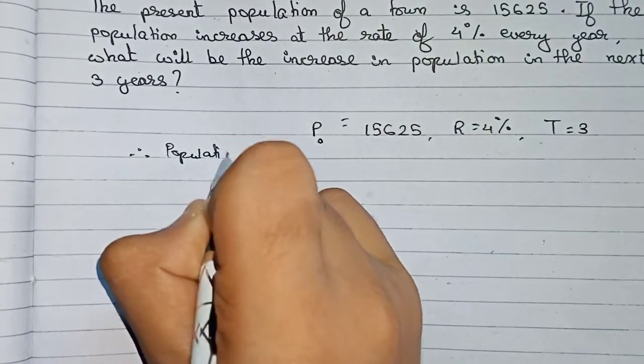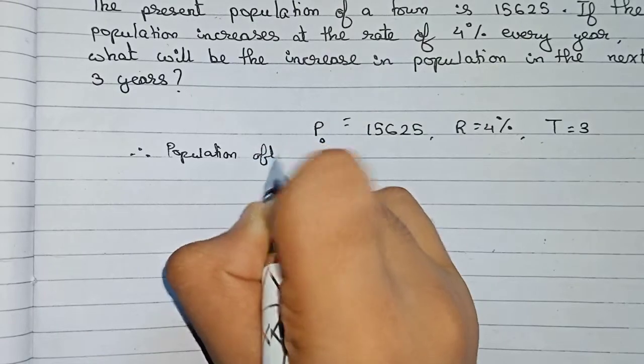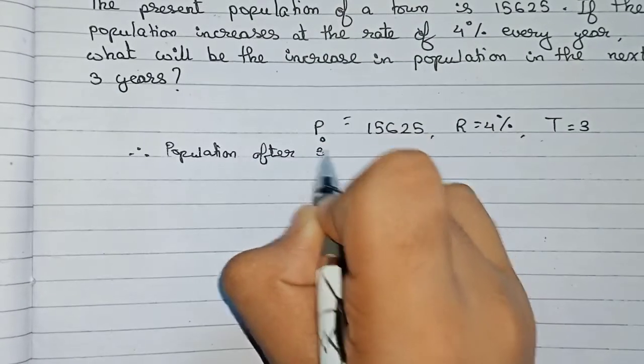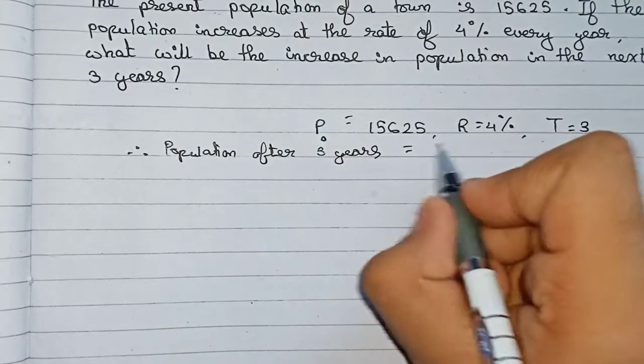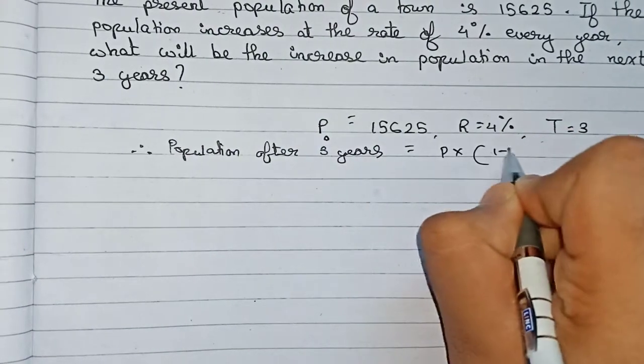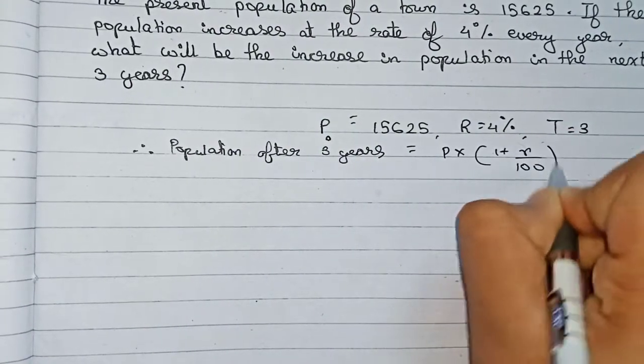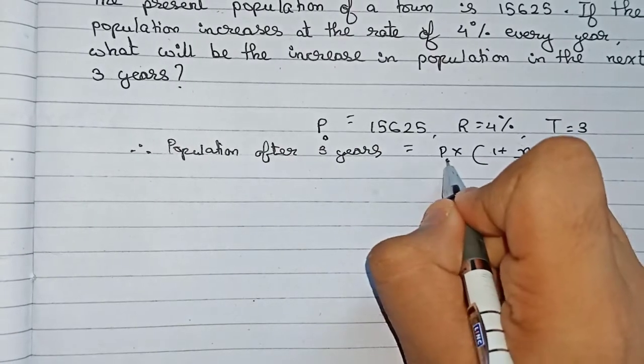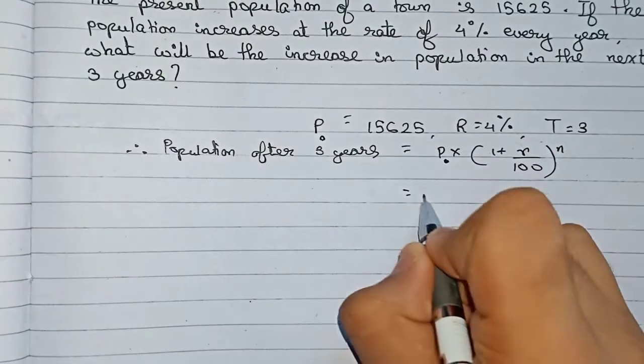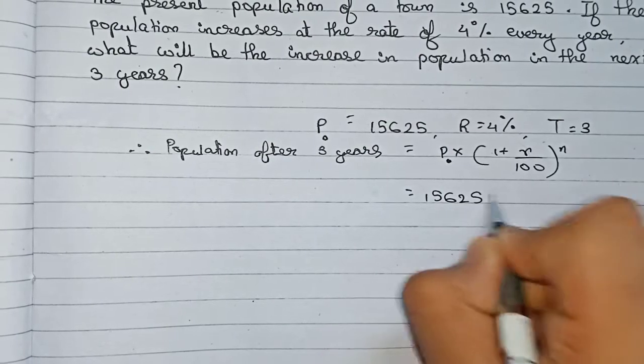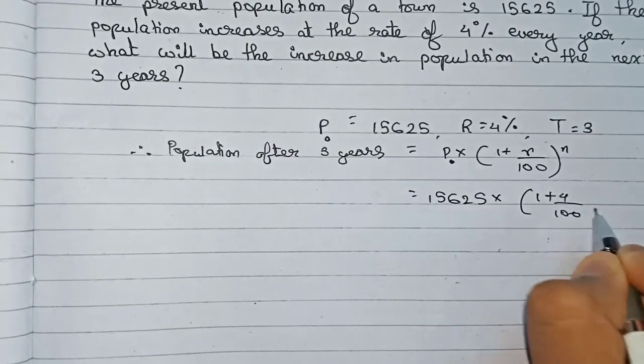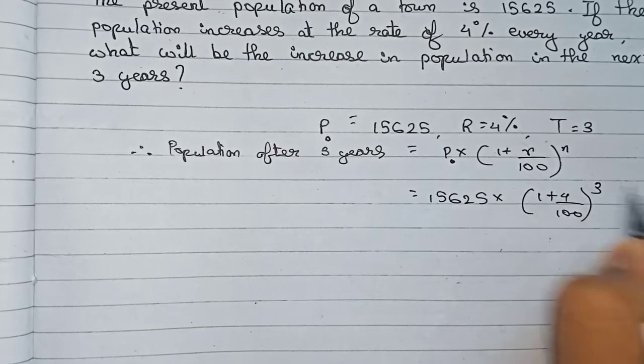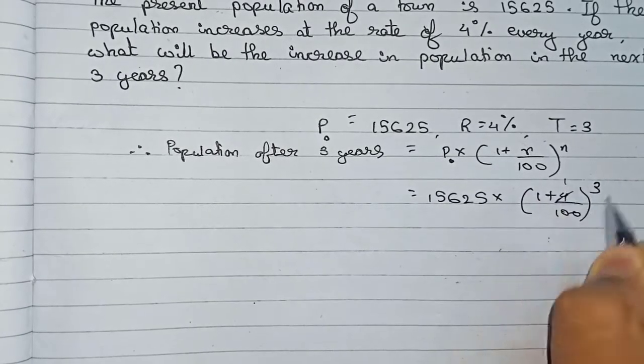...the same formula of compound interest: Principal × (1 + R/100)^n, where n is the time. Here, principal is 15,625, so we put down the values: 15,625 × (1 + 4/100)^3. First, take out 4 and 100 as 1/25.